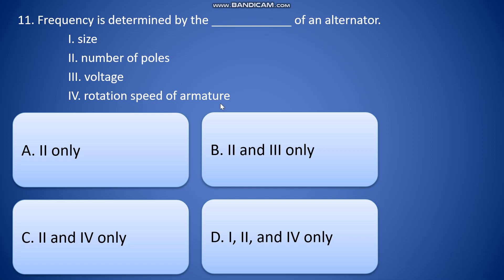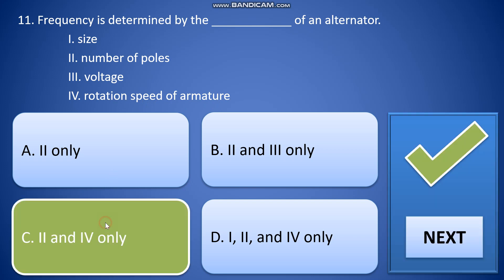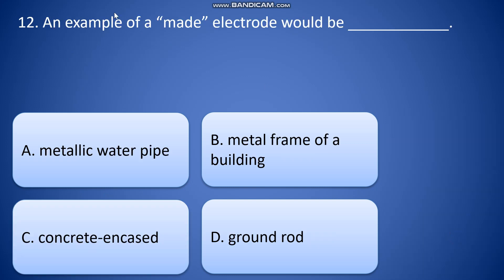So the answer will be two and four only. An example of a made electrode would be: A: metallic wire pipe, B: metallic frame for building, C: concrete encased, D: ground rod. Answer is D, ground rod.